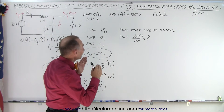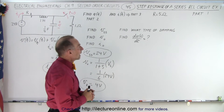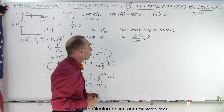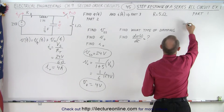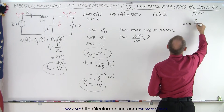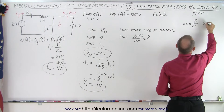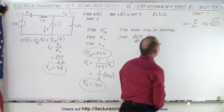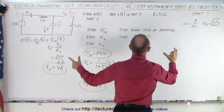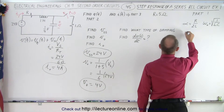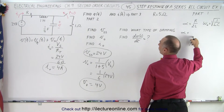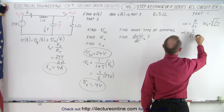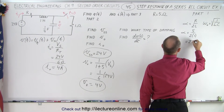Next we need to figure out what type of damping we're dealing with. To do that, we need to find the values for alpha and omega. The value for alpha equals R over 2L, and the value for omega naught equals the square root of 1 over LC. With the current values, alpha equals R over 2L: that's 5 divided by 2 times 1, which equals 2.5.